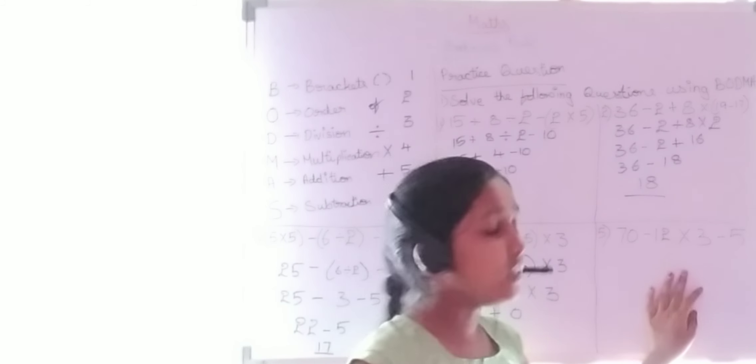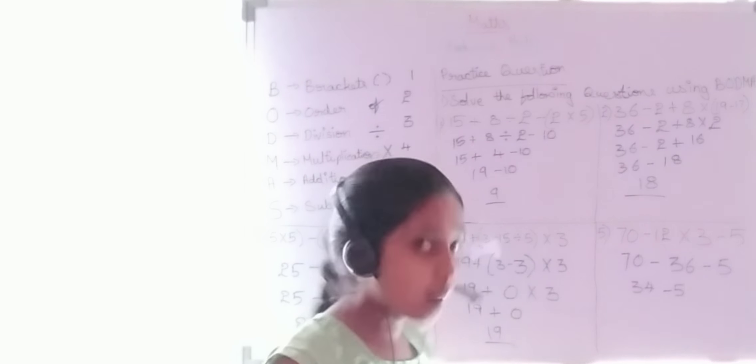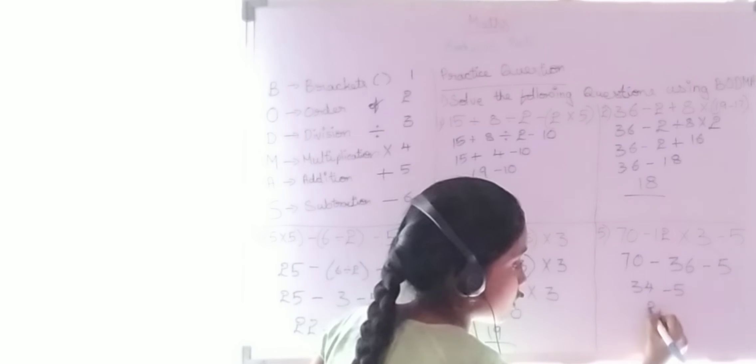Fifth question: 20 − 12 × 3 − 5. First do multiplication: 12 × 3 = 36. Now we have 20 − 36 − 5. Wait — 20 minus 36 minus 5. 70 − 36 = 34, then 34 − 5 = 29. The final answer is 29.